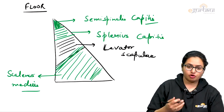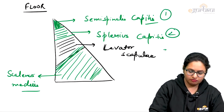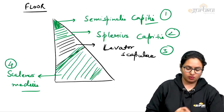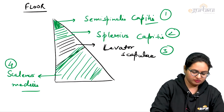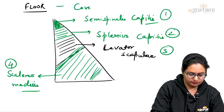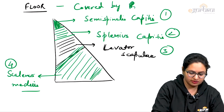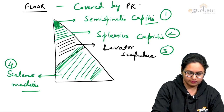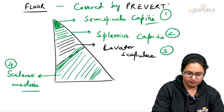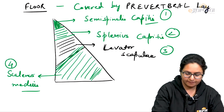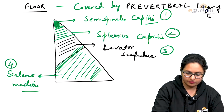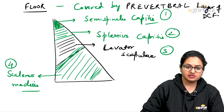These are the muscles which are forming the floor of the posterior triangle, starting from the apex and going till the base. All these muscles are covered by the pre-vertebral layer of the deep cervical fascia.